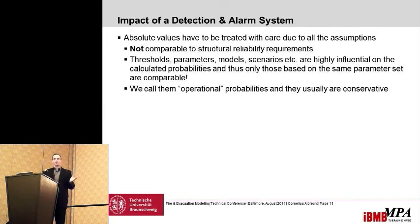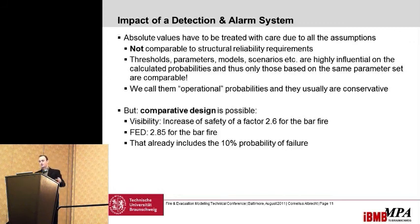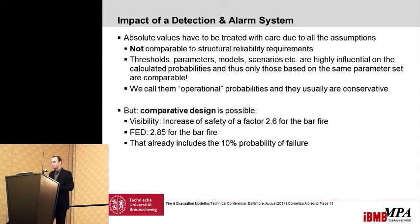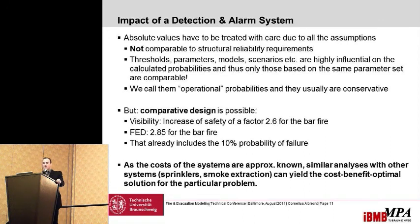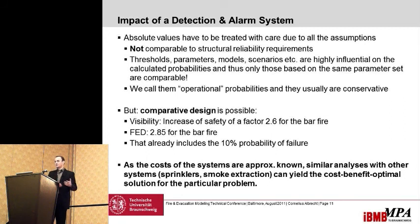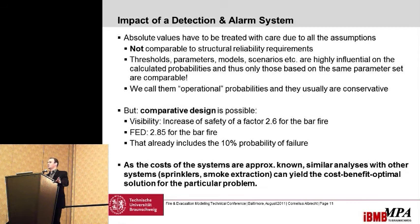What I can extract from this is a comparative design result: for visibility, there is a safety increase of a factor of 2.6 for the bar fire, and even 2.85 for the bar fire using the FED criterion — already including a 10% system failure. As I know approximately the costs of the system, I can compare it to other systems such as sprinklers or smoke and heat extraction systems, find their costs, and compare them. This means I can find the cost-benefit optimal solution for the particular problem.